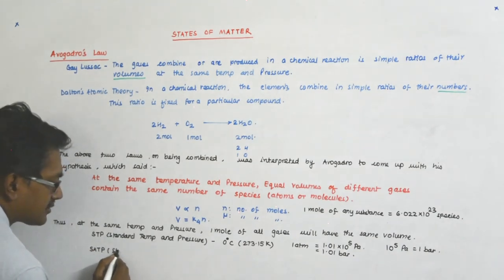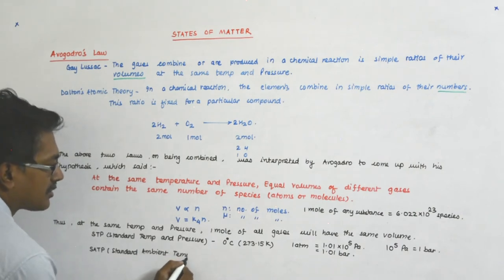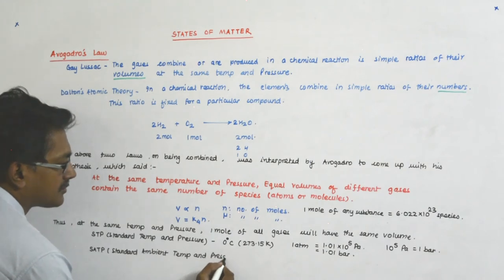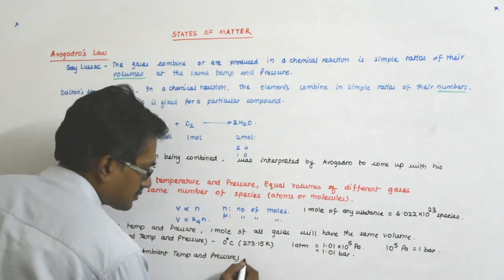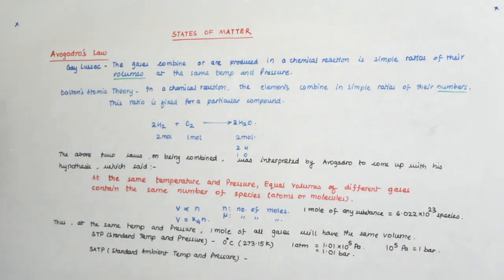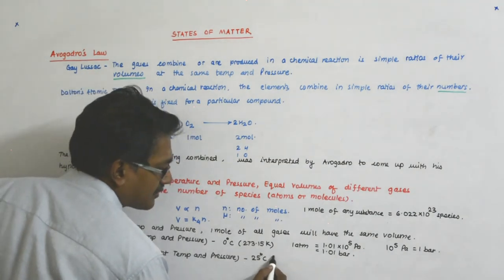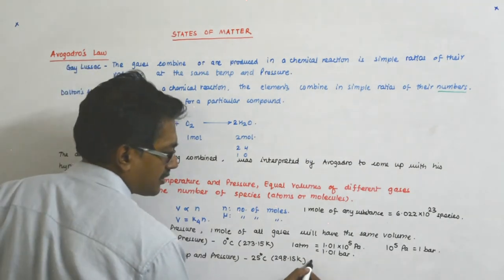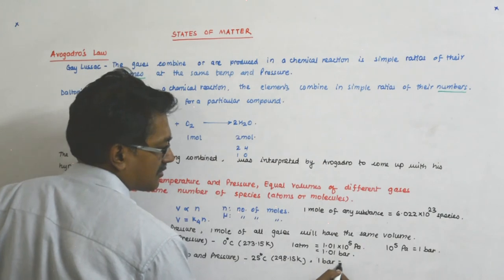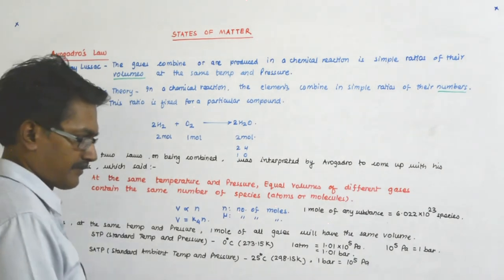Now there is also something called SATP, that is standard ambient temperature and pressure. Now what is that ambient? So it is 25 degrees celsius, which is 298.15 kelvin, and the pressure is 1 bar, which is obviously 10 to the power 5 pascal.